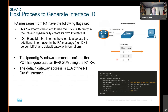The O flag is set to 0, the M flag is set to 0. So it says use additional information from the router advertisement message like DNS server, MTU size, default gateway, etc.